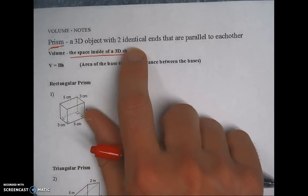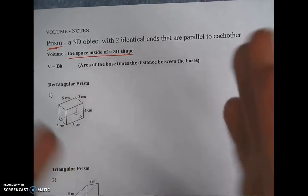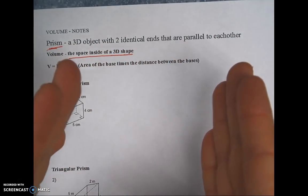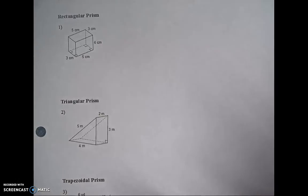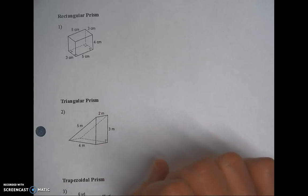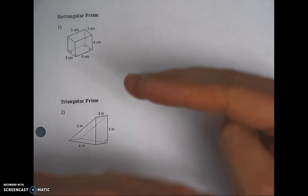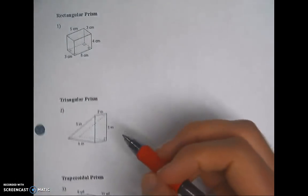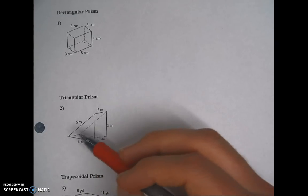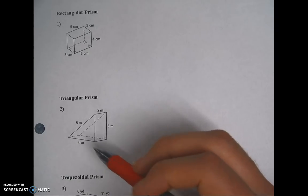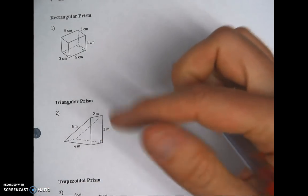A prism is any 3D object with two identical ends that are parallel to each other. A rectangle has lots of opposite parallel sides, but it's easier to see with the triangular prism — there are only two ends: the triangle in the front and the triangle in the back. Those are the only two that are parallel. The other sides don't have a matching parallel cap on the other side, which is why it's called a triangular prism.